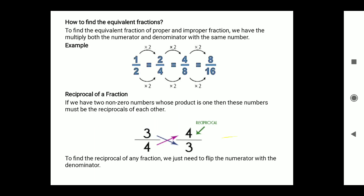How to find equivalent fractions: 1/2 equals 2/4 equals 4/8 equals 8/16. They are all multiplied by 2. To find the equivalent fraction of a proper or improper fraction, we have to multiply. The reciprocal of a fraction: for example, 3/4 and 4/3 are reciprocals of each other.